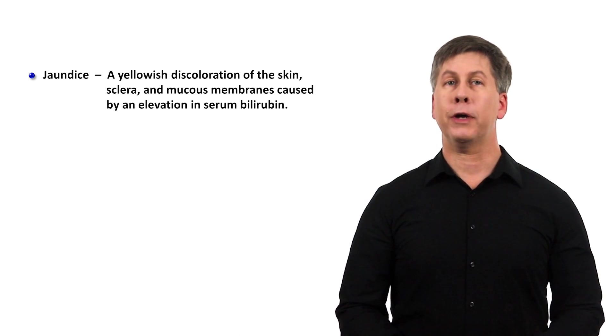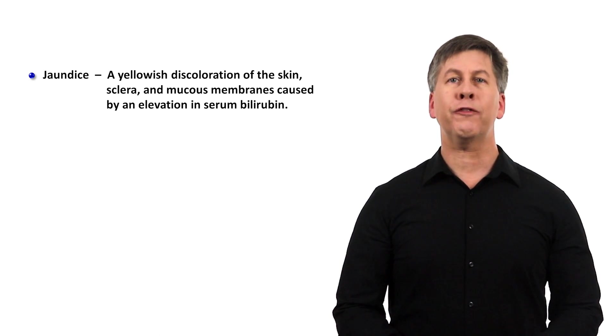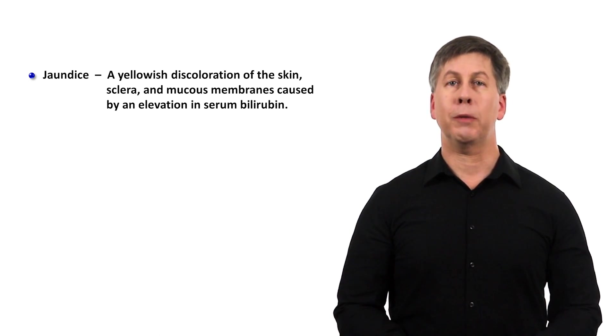Bilirubin is formed as a breakdown product of heme rings, usually from metabolized hemoglobin, as a result of either physiologic or pathophysiologic destruction of red blood cells.